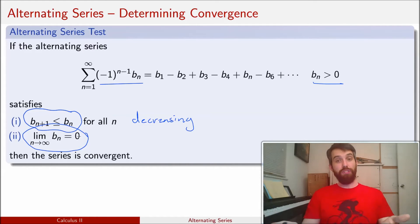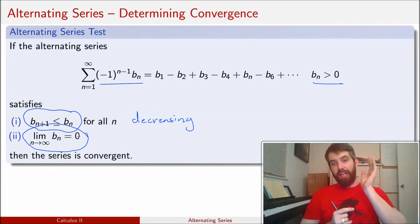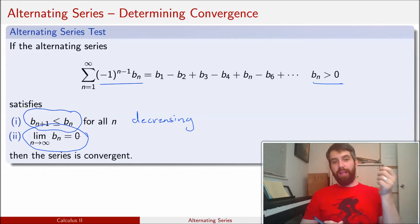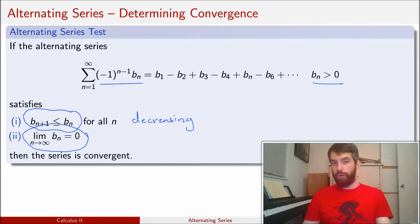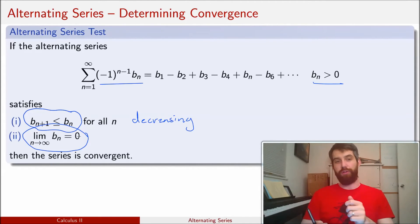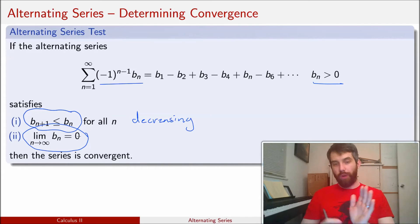I want to compare this with the divergence test, which said: if the limit of the terms did not go to 0, then the series diverged. But in the generic case, if the limit of the terms goes to 0, it may or may not converge — we don't know. It was only that terms not going to 0 that guaranteed divergence. Here, we additionally have the series is alternating and the b_n's are decreasing. Those three properties together ensure convergence — one alone is not enough.